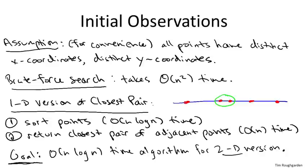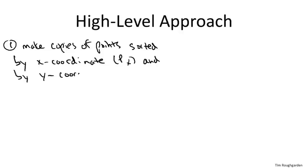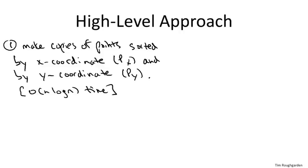We will succeed in this goal. The first idea is to copy what worked in the 1D case. In 1D we sorted the points by their coordinate — very useful. In 2D, points have both x and y coordinates, so there are two ways to sort them. The first step, a preprocessing step, is to take the input points and invoke merge sort once to sort by x coordinate — that gives us array Px — and again to sort by y coordinate — that gives us Py. Merge sort takes n log n time, so this preprocessing only takes O(n log n).